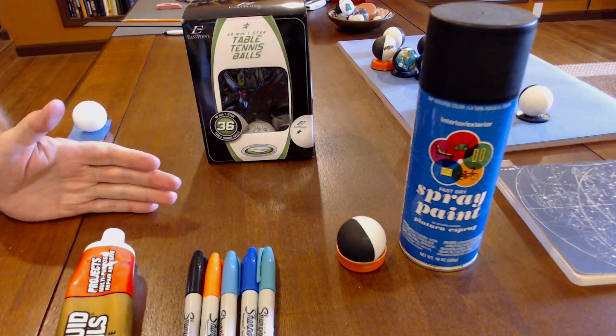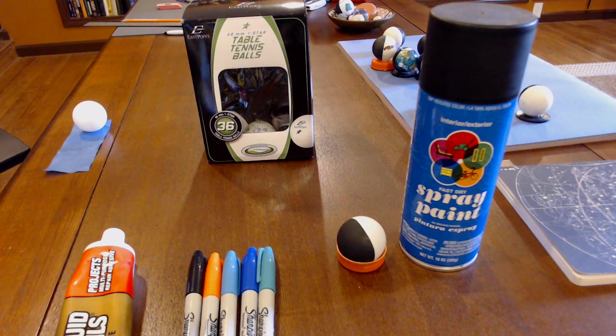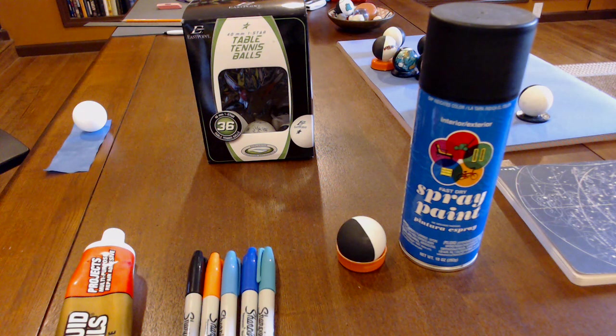If you've taken a look at scientific catalogs for planetary models or solar system models, or perhaps one of these mobile solar systems with the planets on wires that revolve around a little sun in the middle, they're hideously expensive—hundreds even thousands of dollars. We're going to show you today how to make planetary models for less than 50 cents a piece.